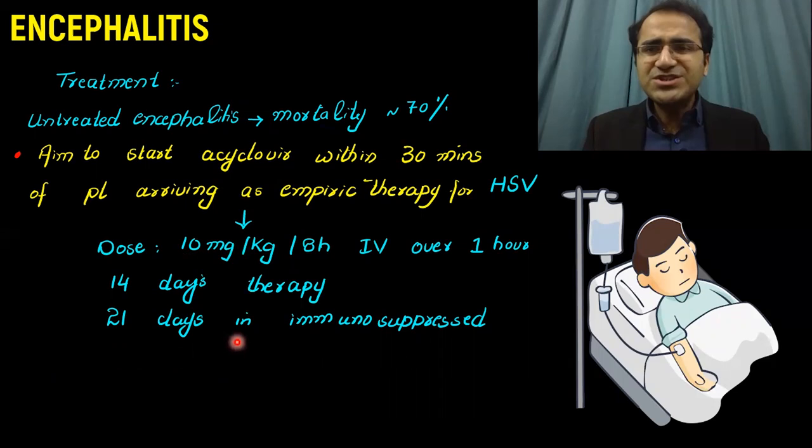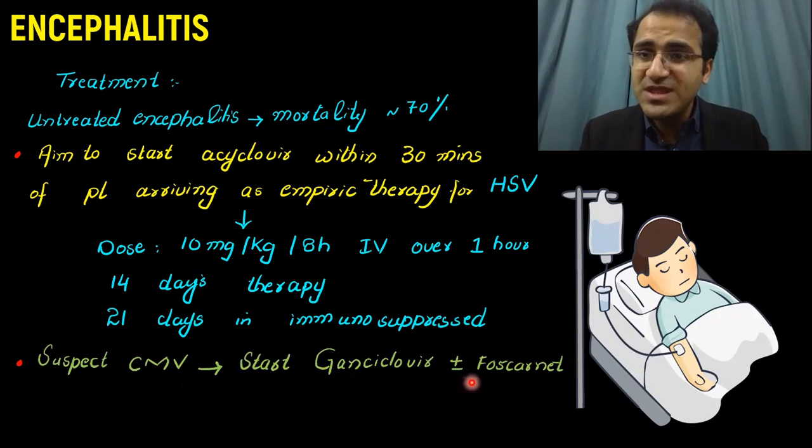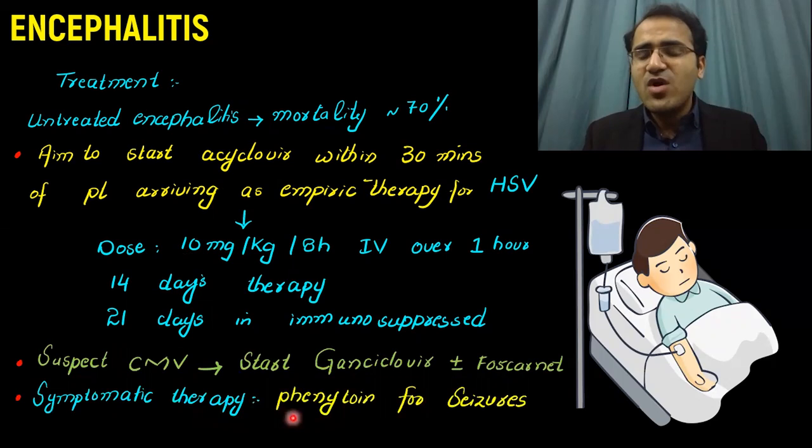The treatment of Encephalitis is mainly supportive, and the specific thing we can treat is herpes simplex virus. If you suspect cytomegalovirus, you can start Ganciclovir with or without Foscarnet. Symptomatic therapy is given with it. Phenytoin is given if the patient develops seizures.